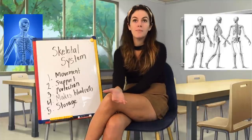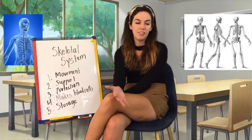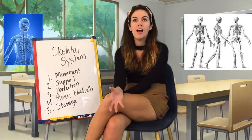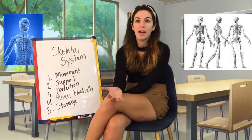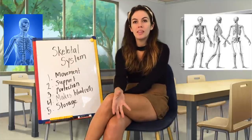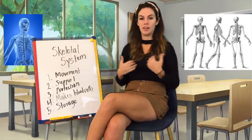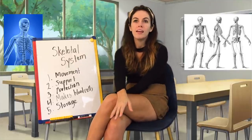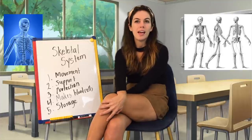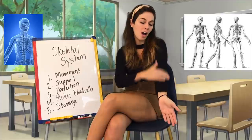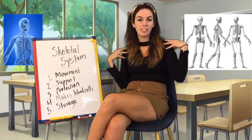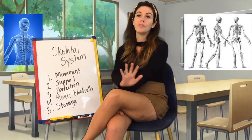There are two major parts of the skeletal system. There's the axial skeleton, which includes the skull, spine, ribs, and sternum — kind of this central area. And then you have the appendicular skeleton, which is the appendages of the body: your arms, your legs, your shoulders. They're more flexible and able to move.